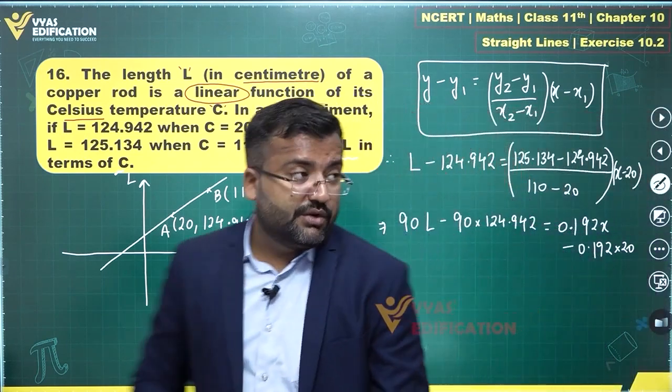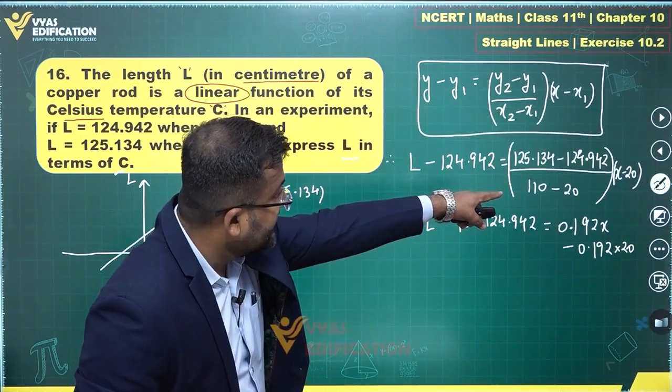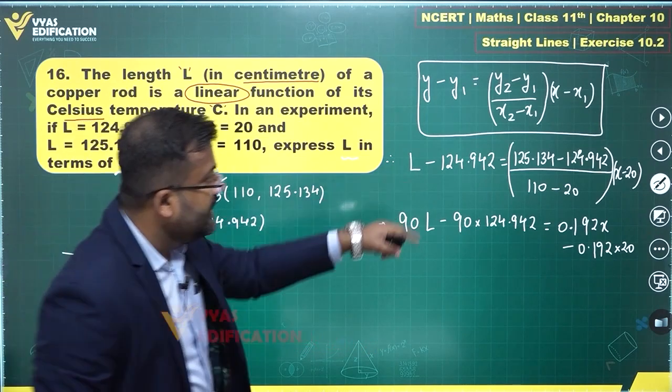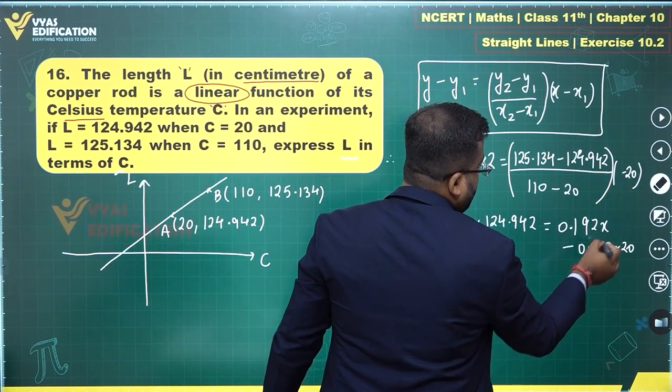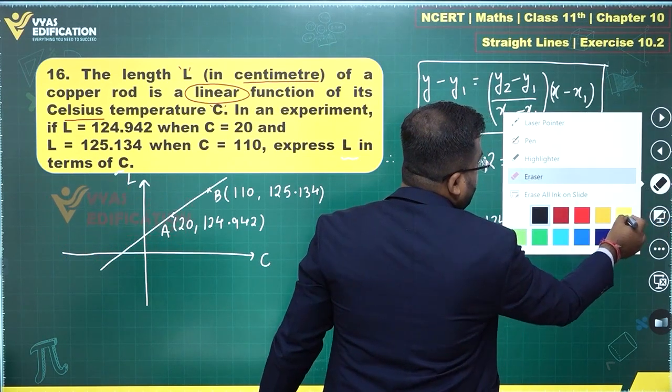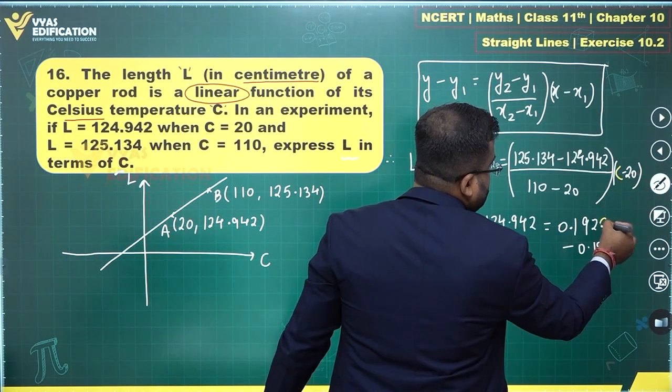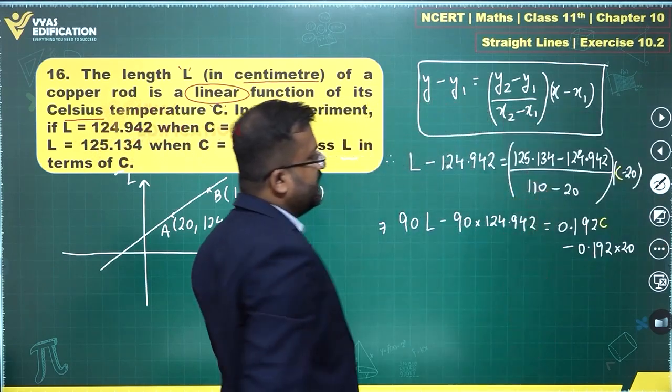This will become this. And this is 0.192 X minus 0.192 times 20 is what I will be getting over here. This is the equation. That will not be X, that will be a C over there. Let's change that X to C. This is not X, this is C over here. This is C. Once you make that modification, now let's continue further.